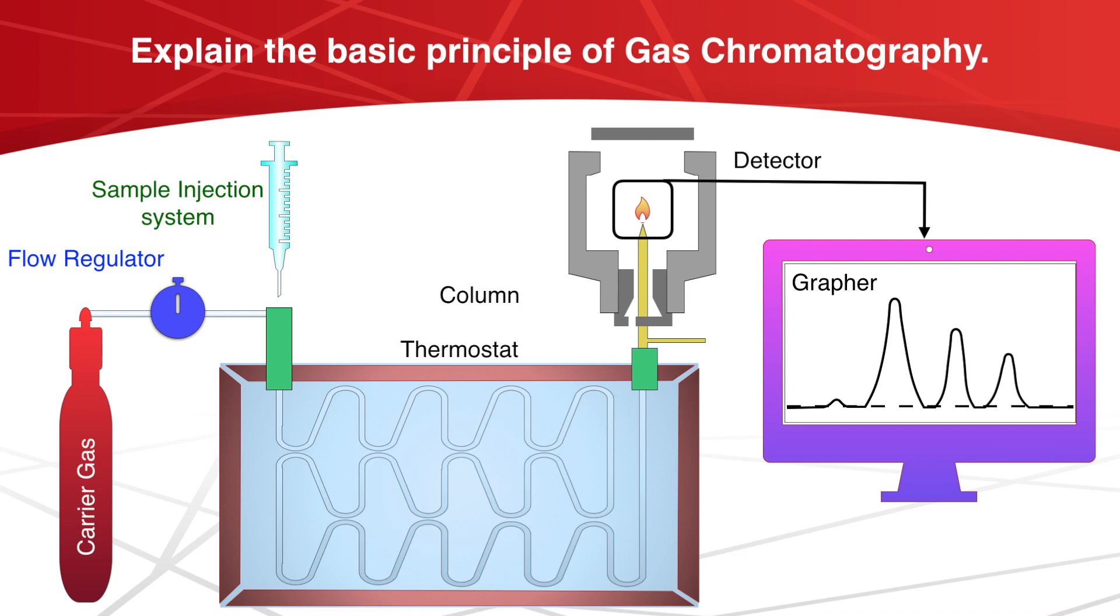So let's discuss how it works. Consider a mixture containing three components A, B and C. It is to be separated by gas liquid chromatography or GLC. A very small quantity, 0.2 microliter, is injected into the front end of the column through a rubber septum by means of a syringe.